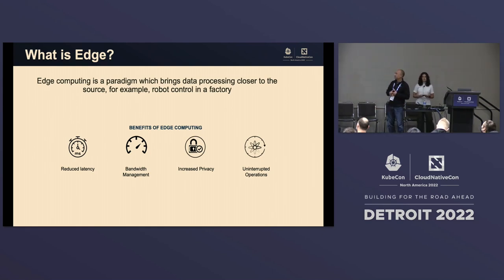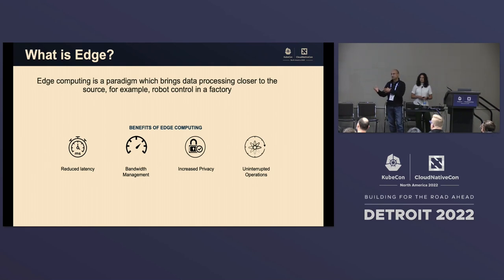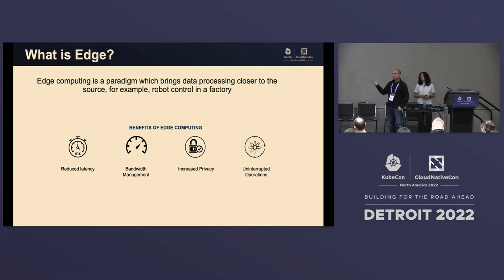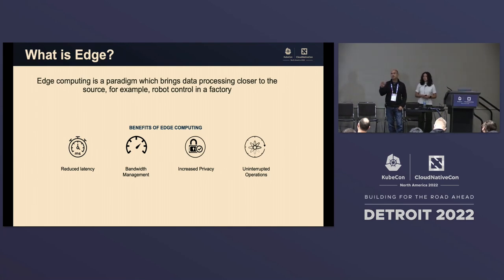If you're at this event, you know what the edge is and you've heard enough definitions. But we are going to give you our definition for context setting. We define edge computing as a paradigm which brings compute and data processing closer to the source or the user — for example, robot control in a factory. There are four key benefits: reduced latency for virtual reality or drone control; bandwidth management, processing hundreds of cameras at the edge instead of pushing data to the public cloud; increased privacy depending on local regulations; and uninterrupted operations if you have poor or absent network connectivity, such as on a cruise ship or a remote mining site.